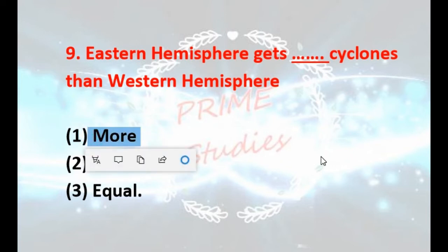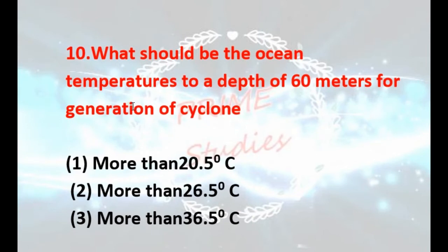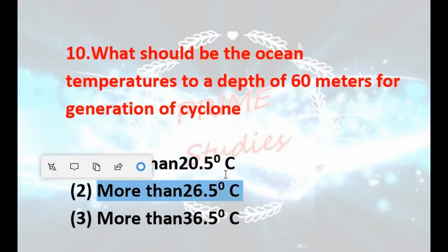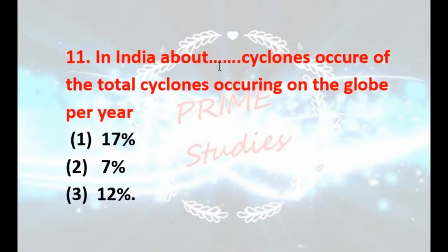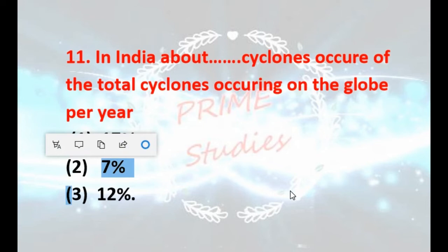What should be the ocean temperature to a depth of 60 meters for generation of cyclones — more than 20.5°C, 26.5°C, or 36.5°C? Your answer is second: it should be more than 26.5 degrees centigrade up to 60 meters. In India, about what percentage of the total cyclones occurring on the globe per year occur — 17%, 7%, or 12%? Your answer is 7%, about 5 per year.